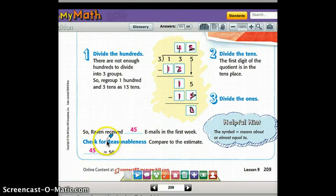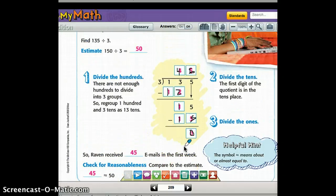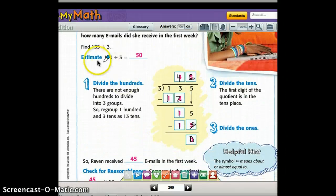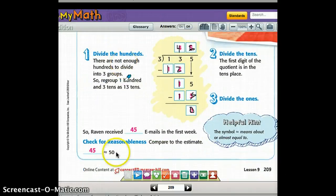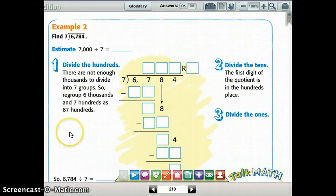And remember, you can check, you can compare it to an estimate. In the beginning they estimated, they rounded this to 150 divided by 3. Another way to check would be to multiply 45 by 3 and make sure you get 135.